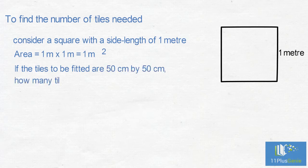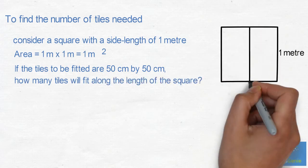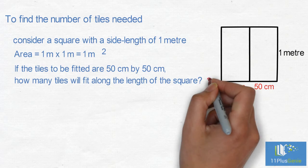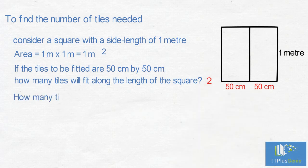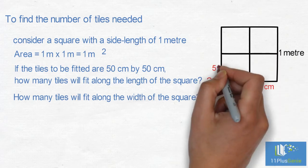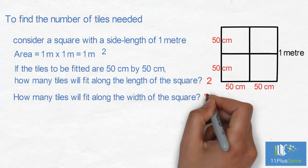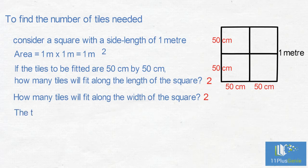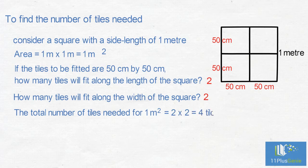How many of the tiles will fit along the length of the square? We can fit two tiles along the length. How many tiles will fit along the width of the square? Again we can fit two tiles along the width. The total number of tiles needed for 1 square meter equals 2 x 2 which equals 4 tiles.